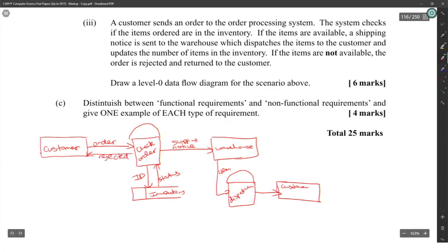The dispatch will get the item, send to the customer, and update the number of items in the inventory. If the items are not available, the order is rejected. That's six marks. One mark, two marks, three marks, four marks, five marks, and the two marks for arrows I guess.